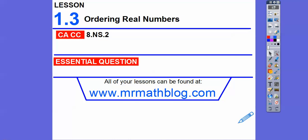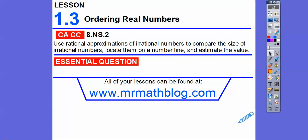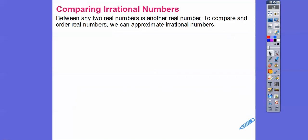Hey, everybody. This lesson is ordering real numbers. We're going to get numbers like square roots and pi involved, and we're just going to order them from least to greatest or greatest to least. We're going to do some good guesstimating on this. Our question is: how can we order a set of real numbers?